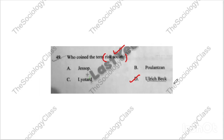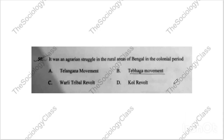What is risk society, and what did Anthony Giddens say about it? We have already discussed all these in previous papers. Question fifty: 'It was an agrarian struggle in the rural areas of Bengal in the colonial period.' Options: Telangana movement, Tebhaga movement, tribal revolt, or Quit revolt. The correct answer is B — Tebhaga movement.